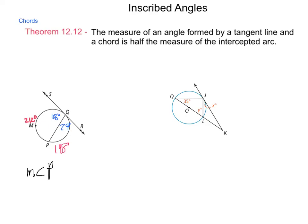the measure of angle PQR is 74 degrees. Either way, so multiple ways of coming out to our same solution.